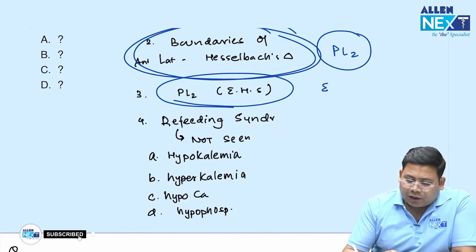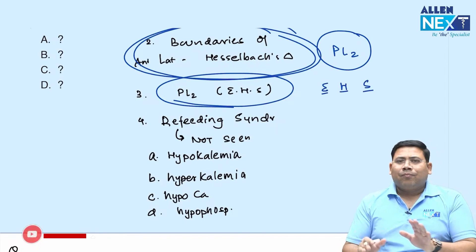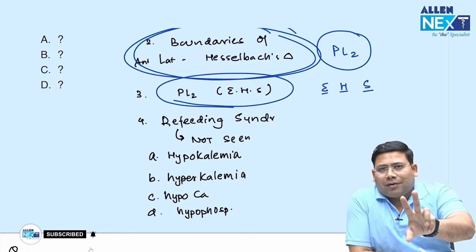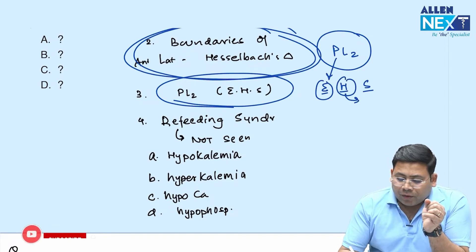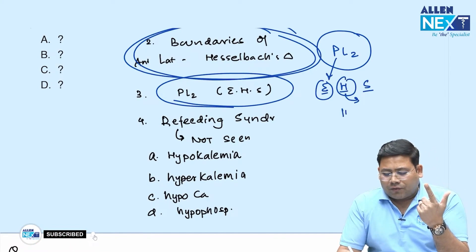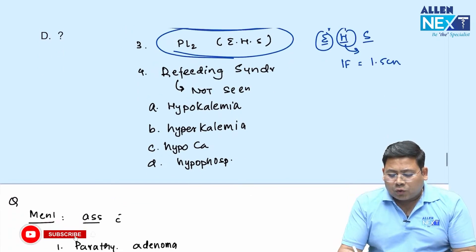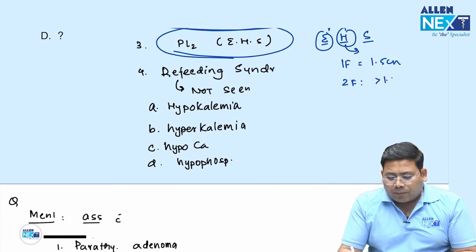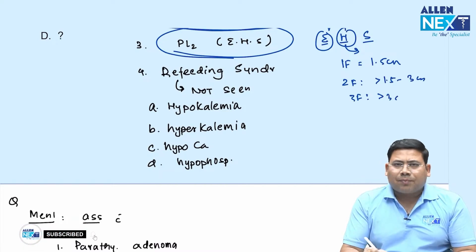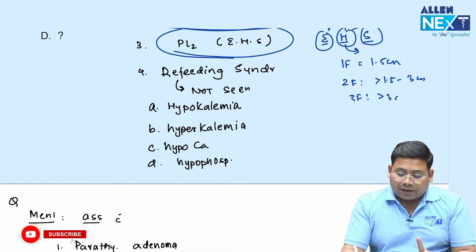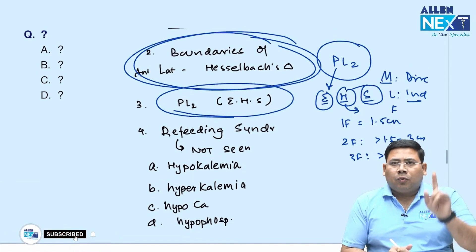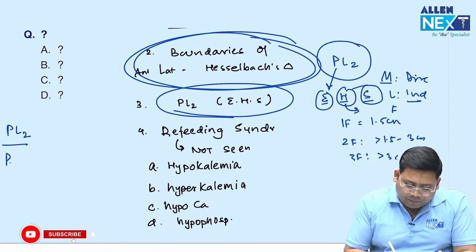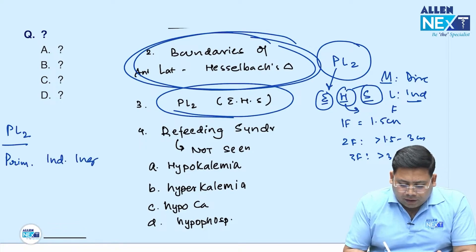A question on EHS — European Hernia Society classification. In EHS: E is for etiology, H is for hernia size, S is for side. PL2 means: P = primary (not associated with any cause), L = lateral (indirect), 2 = two-finger width defect (1.5 to 3 cm). So PL2 stands for a primary indirect inguinal hernia with a 1.5 to 3 centimeter defect.